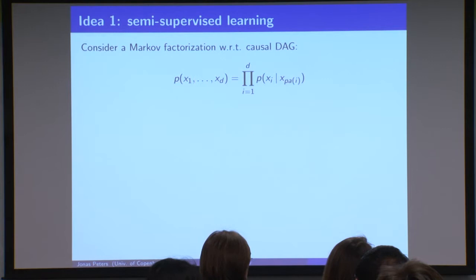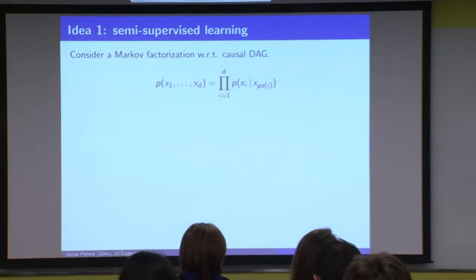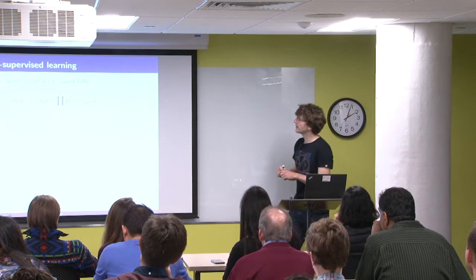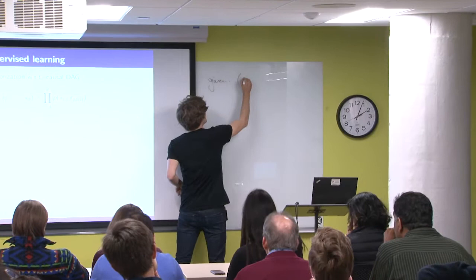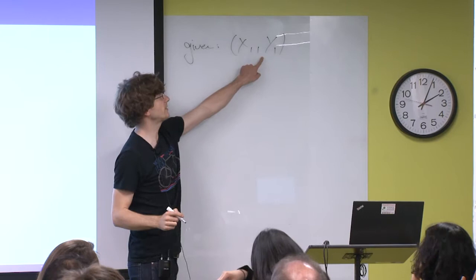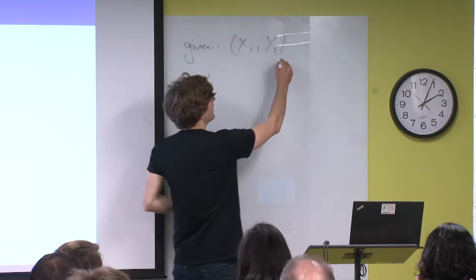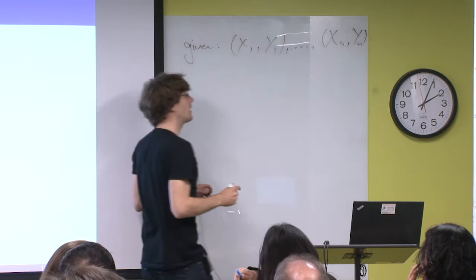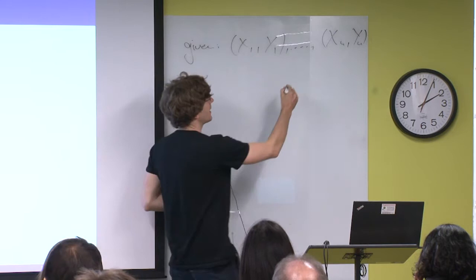What is semi-supervised learning? The idea is: in supervised learning, we receive data and in a classification setting we also receive the class labels. So we're given some data points — these are always our features and this is something we want to predict. Y is the class label. We receive data points (x1, y1) until (xn, yn), where this is always the class label and this is always the feature, and they are i.i.d.